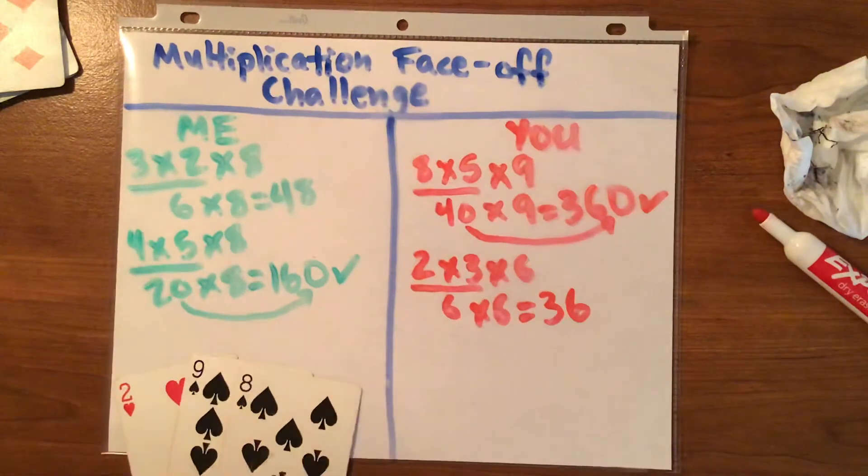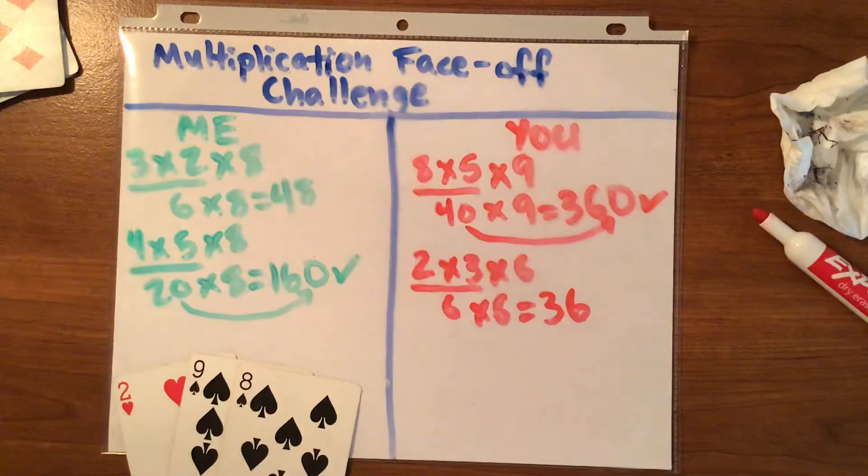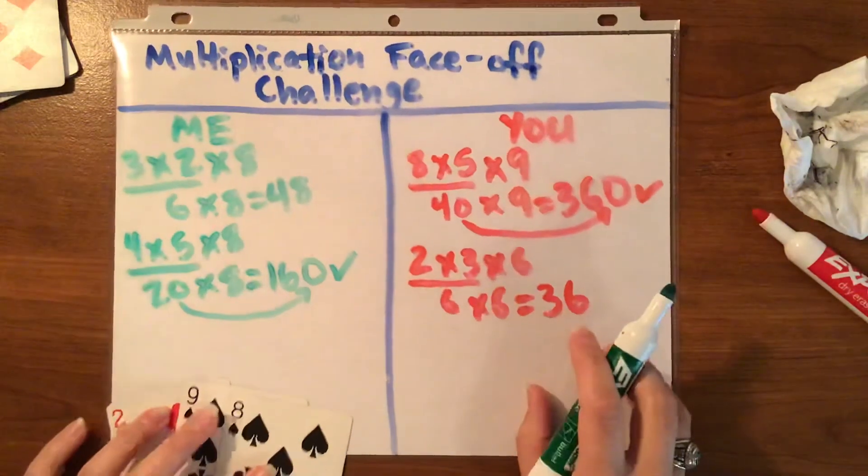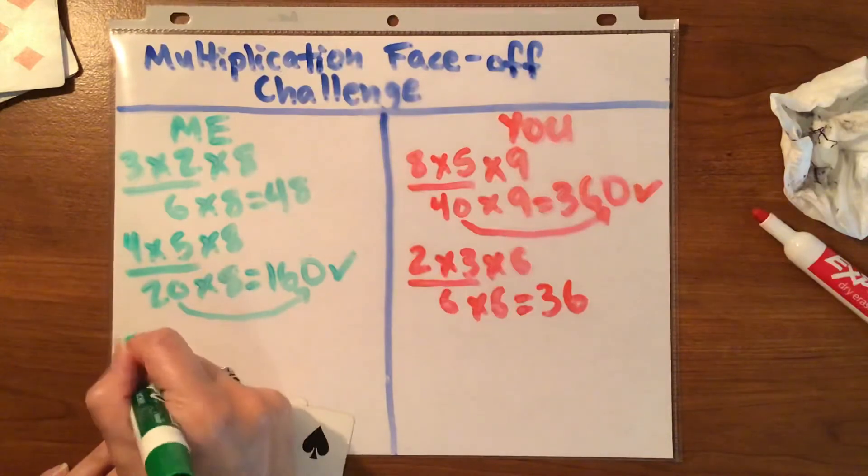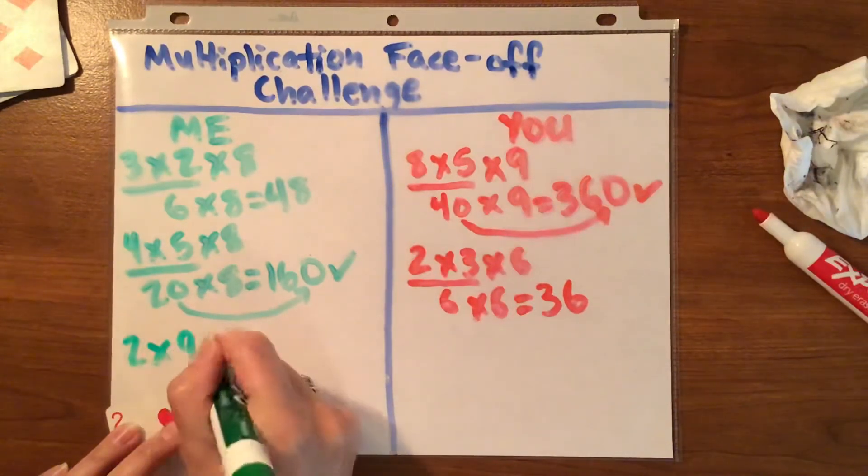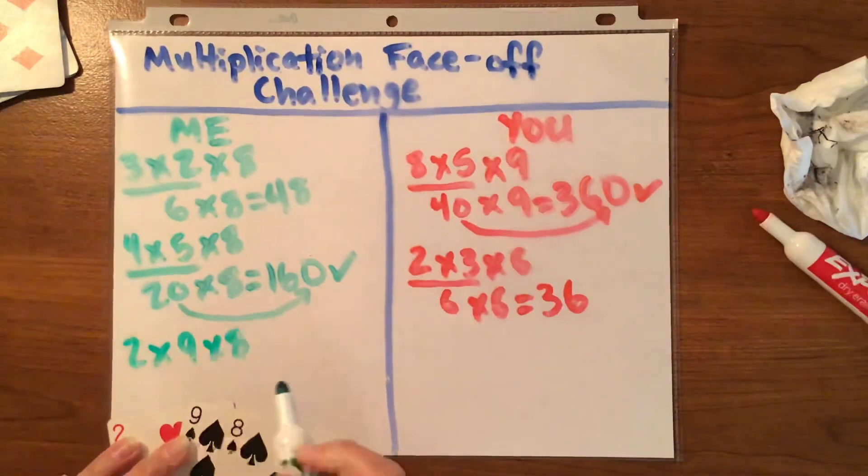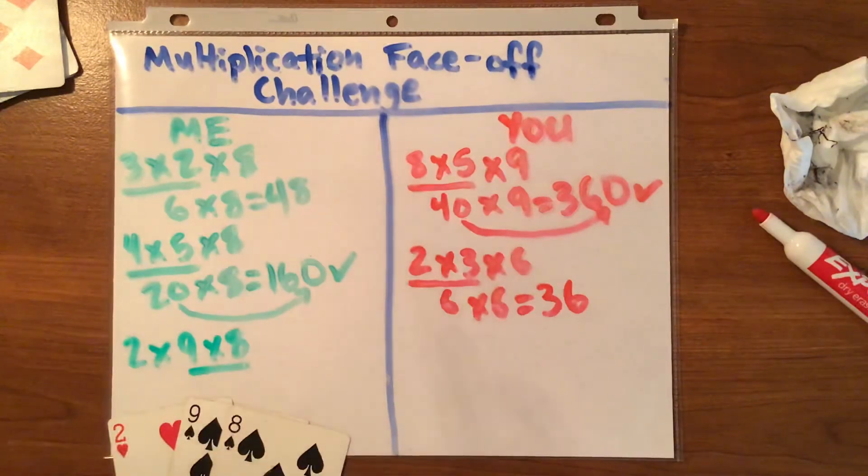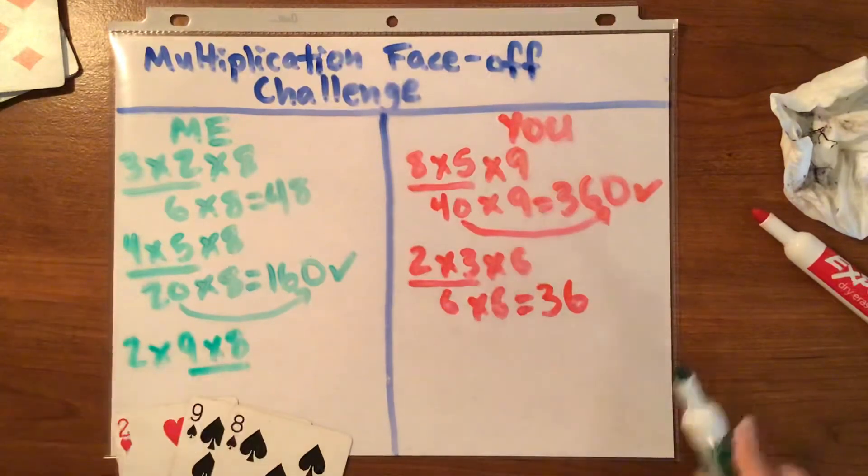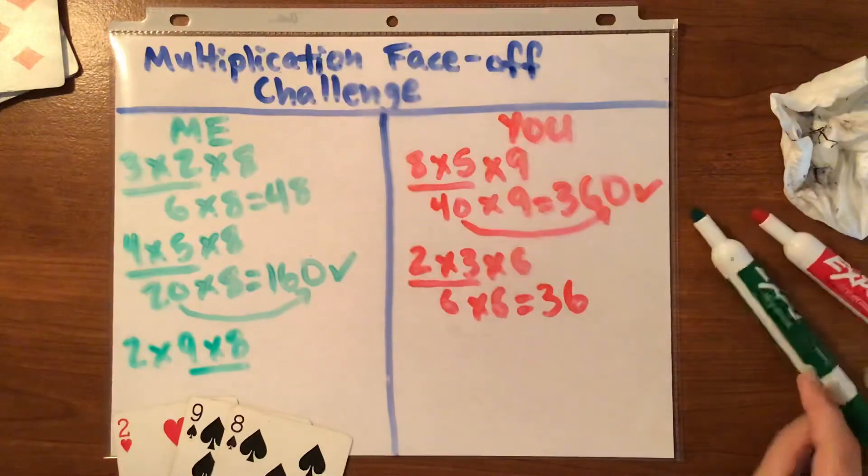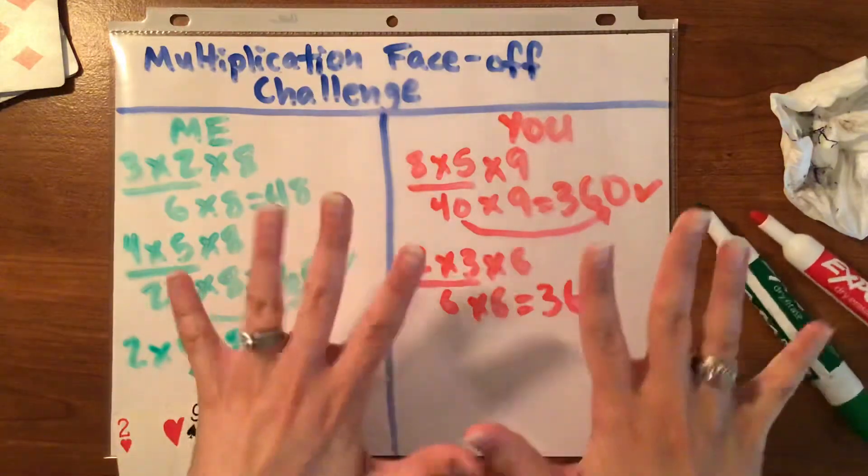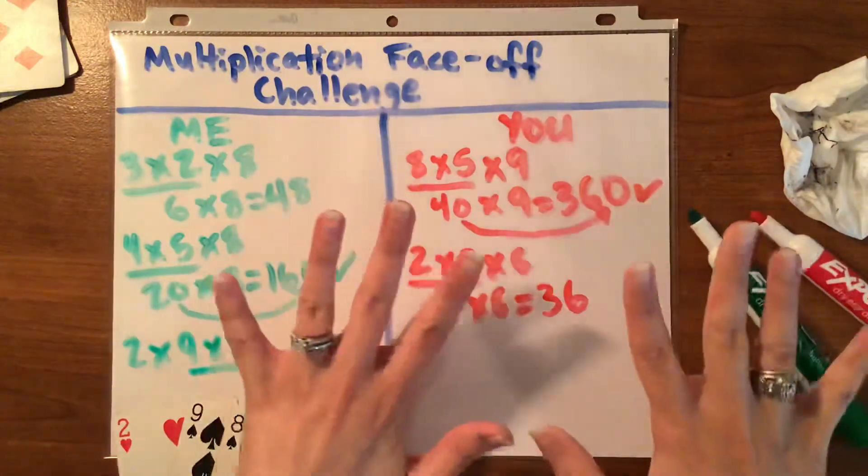So, I got a two, a nine, and an eight. I would keep it as is. Two times nine times eight. But I would do these multiplied first and then double that answer. That's just how my brain sees it. So, nine times eight. Here's the nines trick. So, nine times that number eight.